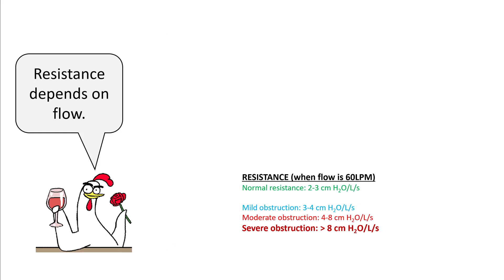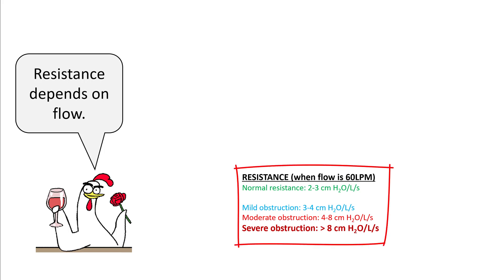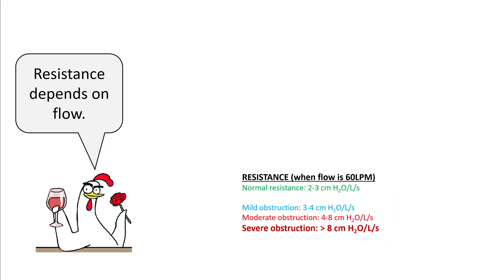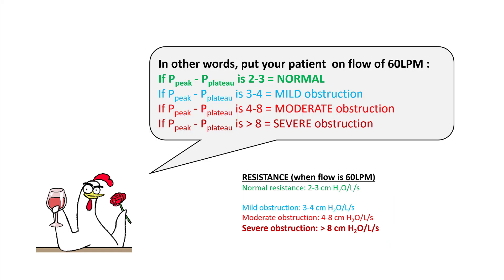Since resistance depends on flow, it is very important to note the flow when you calculate resistance. Usually when the flow is around 60 liters per minute, normal resistance is around 2 to 3 centimeter water per liter per second. In severe obstruction, the resistance can go up to 8 centimeters. In other words, if your patient is on a flow of 60 liters per minute (which is 1 liter per second), if your peak minus plateau is 2 to 3, that's normal; 3 to 4 is mild obstruction; 4 to 8 is moderate obstruction; and more than 8 is severe obstruction.